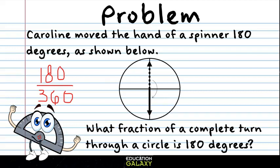180 goes into both of those numbers. So 180 divided by 180 is 1, and 360 divided by 180 is 2. So that means our answer is one half. And that makes sense because our picture, the arrows went one half of the way around the circle.